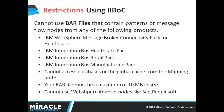Now we look at the restrictions on using IIB on Cloud. We cannot deploy BAR files that contain patterns or message flow nodes from products such as WMB Connectivity Pack for Healthcare, IIB Retail Pack, or IIB Manufacturing Pack. We also cannot access databases or global cache from the mapping node. Another restriction is that we cannot deploy a BAR file that is more than 10 MB in size, and we cannot use adapter nodes like SAP and PeopleSoft.